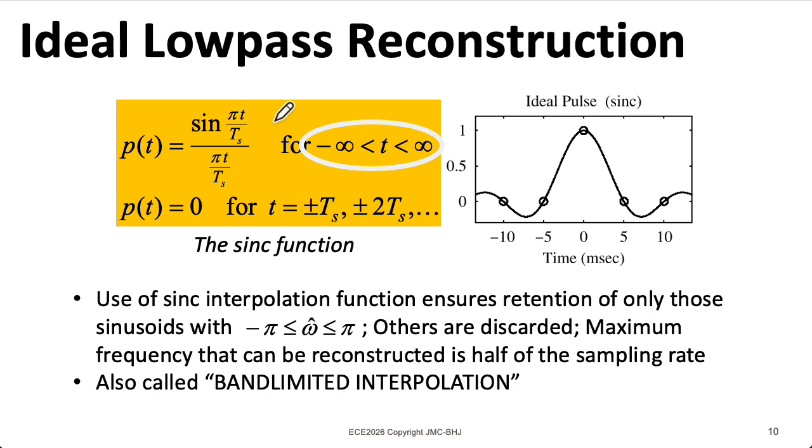Now at t equals zero, sine of zero is zero, and the denominator is zero, so you have a zero over zero kind of form. You can use L'Hopital's rule to show that this converges to one as t goes to zero. So we wind up just defining it as being one at zero.